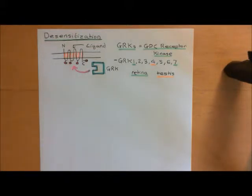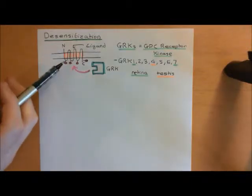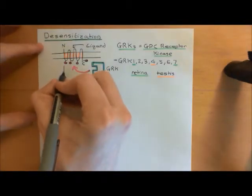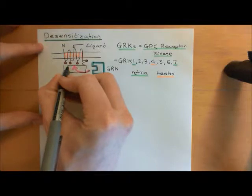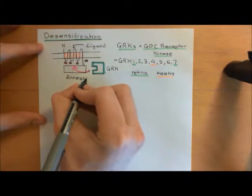What happens when you phosphorylate the intracellular aspect of a G-protein-coupled receptor? Basically, what it does is it allows another protein to now bind onto the intracellular aspect of the G-protein-coupled receptor. When your G-protein-coupled receptor is in the on state for too long and its ligand has been bound for too long, the GRKs phosphorylate the intracellular aspect, paving the way for a new protein to come in and bind — and this new protein is what's called arrestin.